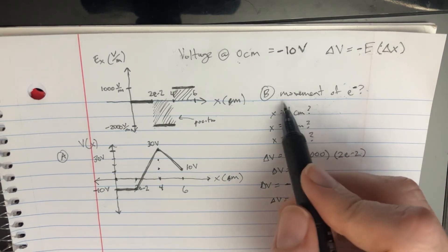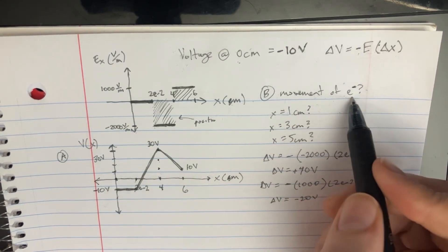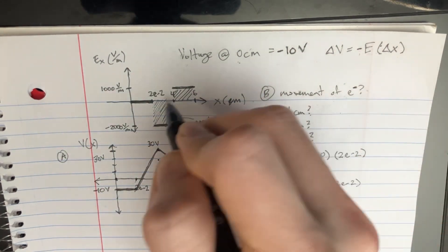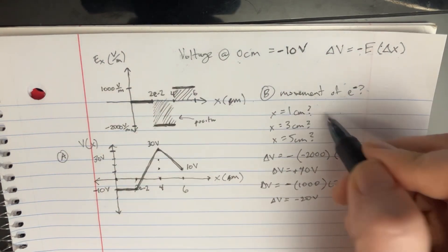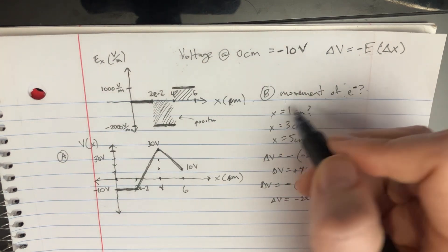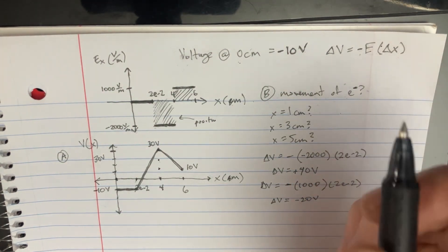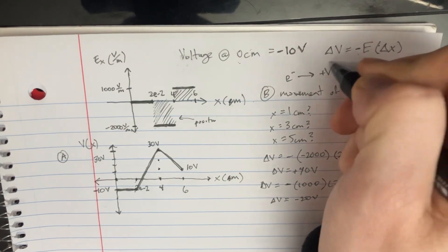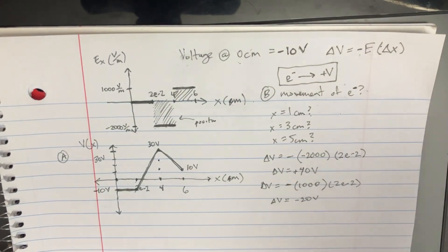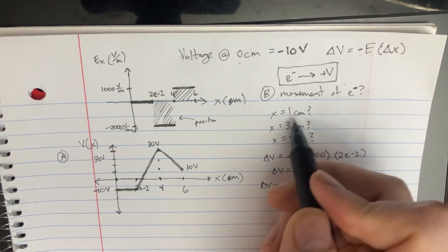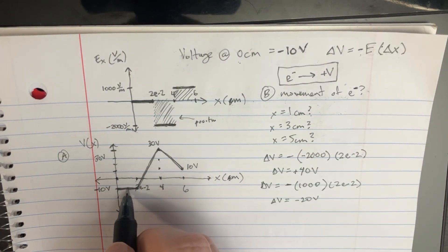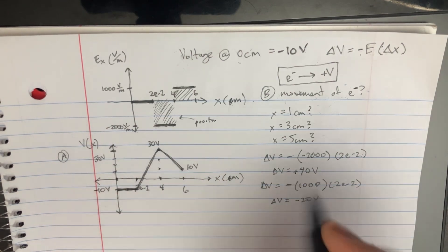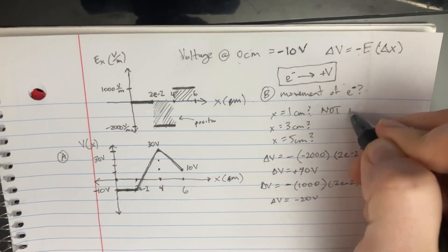The next part of the problem is asking for the movement of an electron if we were to place it at 1 centimeter. One thing really important to remember is that electrons are going to move toward the positive potential. At 1 centimeter, the potential is completely flat, so therefore this electron will not move.